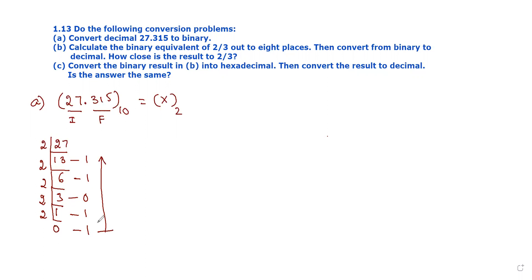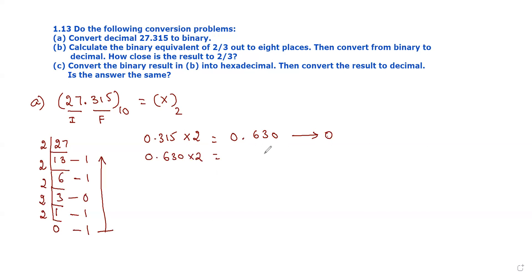Continuing the division steps: 630 divided by 2 gives the quotient 061, with remainder 1. Then 0.260 multiplied by 2 gives 0.520, so the binary value for this step is 0.